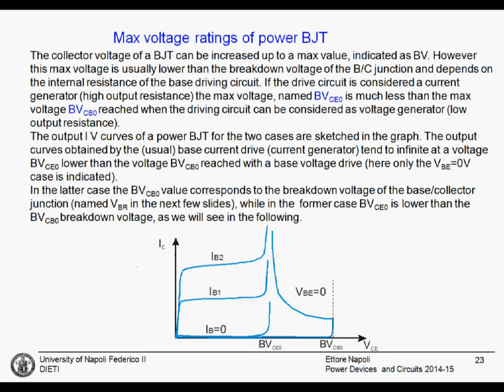We can now move to a further aspect of the device, the BJT, and we'll talk about the maximum voltage ratings of the bipolar junction transistor. Up to now we've said that the wide collector region, the thick collector region, is needed to sustain the reverse voltage, and more or less we can think of a design that is similar to what we do for a PIN diode. There are, however, important differences due to the presence of the bipolar effect into the device.